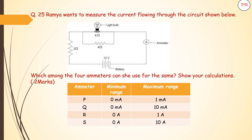Ramya wants to measure the current flowing through the circuit shown below. These people have given us the circuit — there is a battery of 12 volts and resistances of 2 ohm, 8 ohm, and 4 ohm are connected. They are asking us which among the 4 ammeters can she use for the same. Show your calculation. This question is for 2 marks.